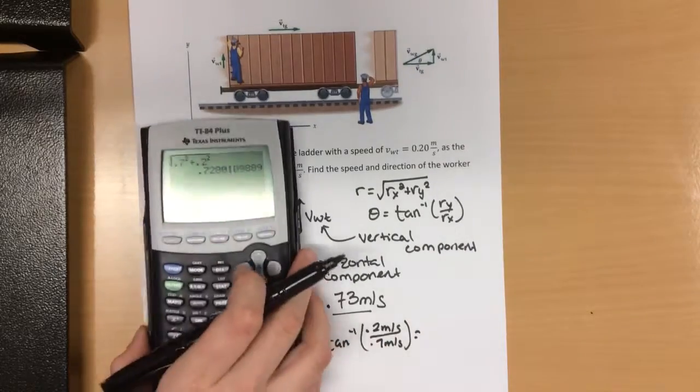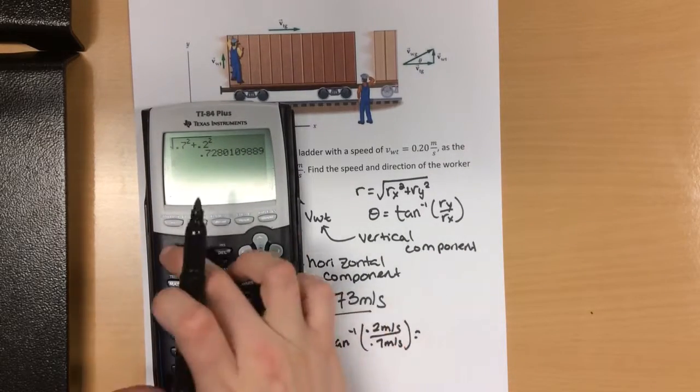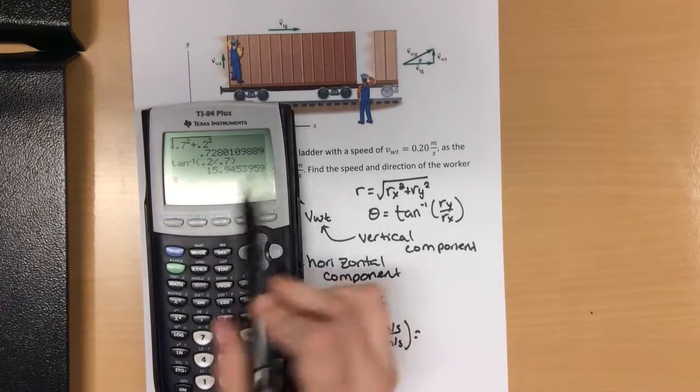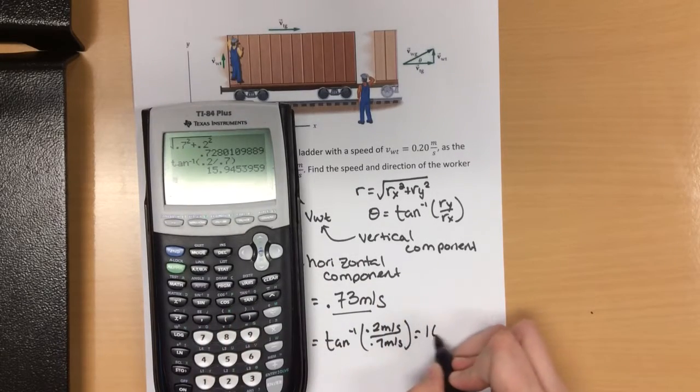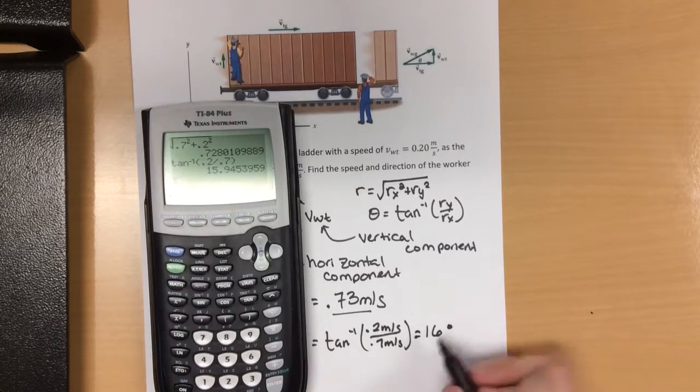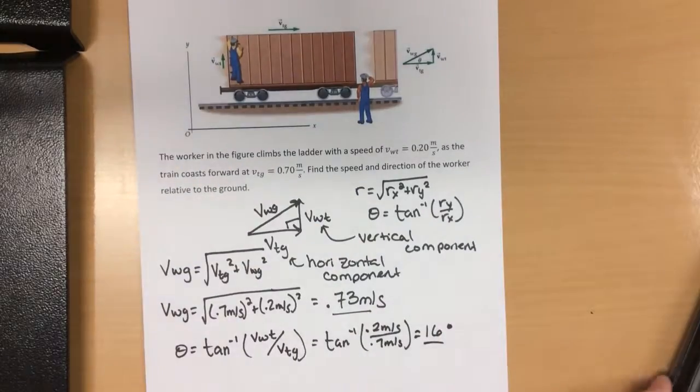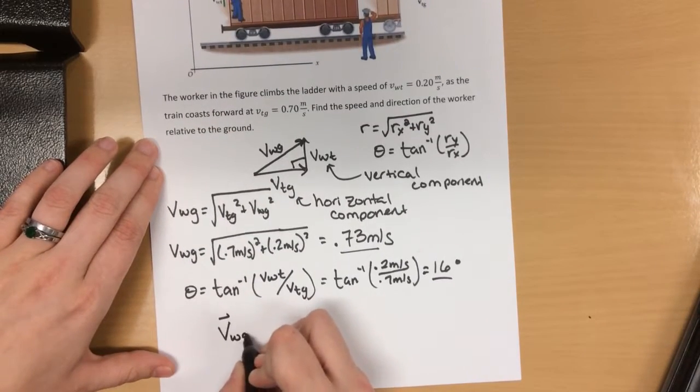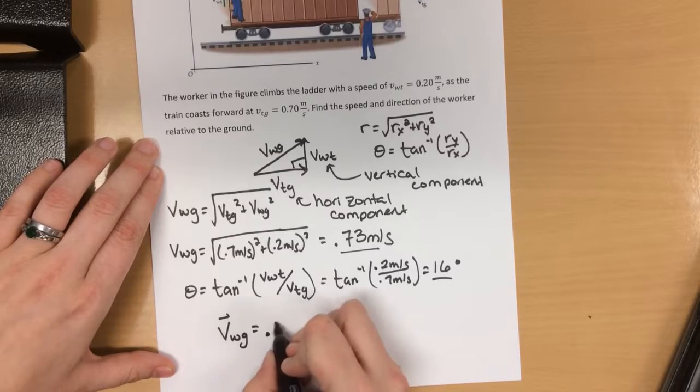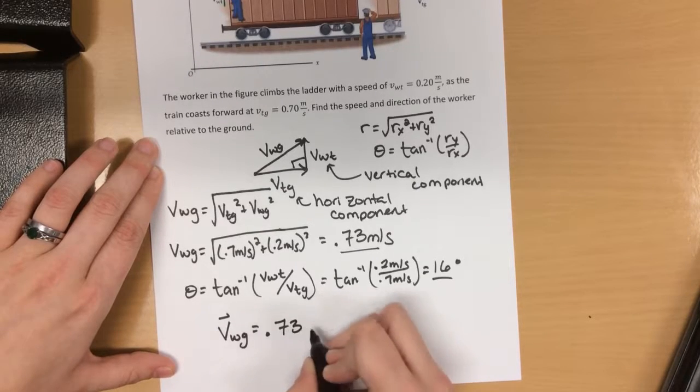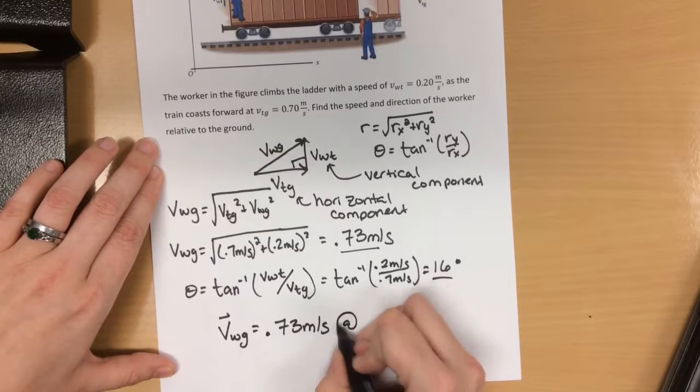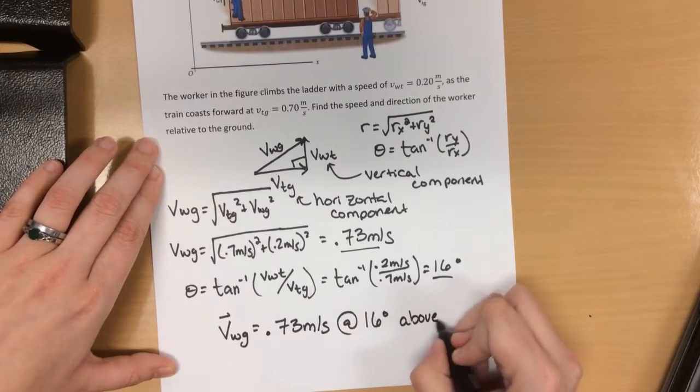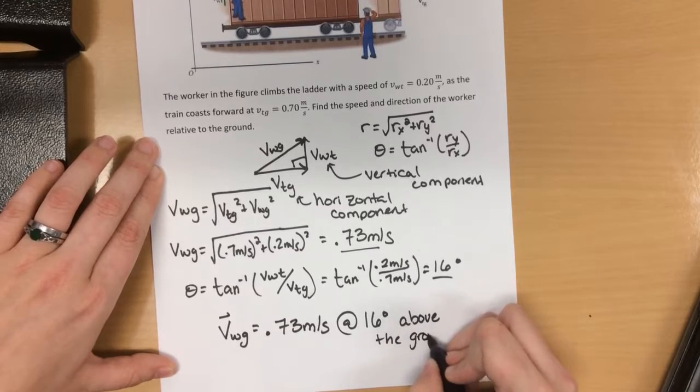Plugging that into my calculator, inverse tangent of 0.2 divided by 0.7 gives me an angle of 16 degrees. As a result, the velocity of the worker relative to the ground is 0.73 meters per second at 16 degrees above the ground.